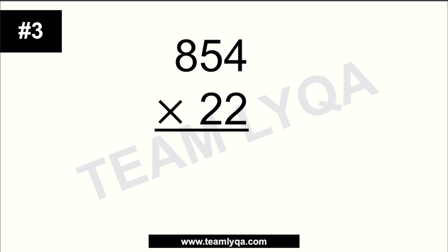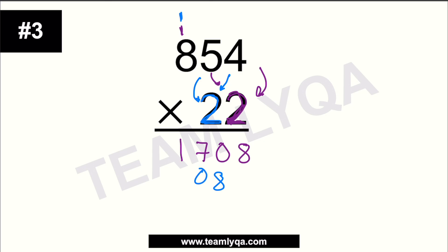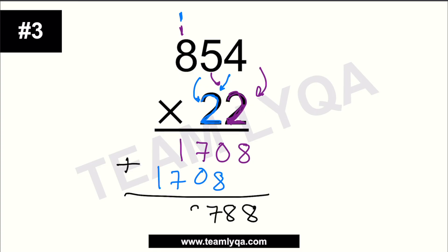For the third question, we have a 3-digit number, 854, times 22. Start with the 1s digit of 22, which is 2. Focus on that 2: 4 times 2 is 8. 5 times 2 is 10 — write the 0, carry the 1. 8 times 2 is 16, plus 1 is 17 — write 17 since there's nothing beside it. Now look at the 10s digit of 22, another 2: 4 times 2 is 8; 5 times 2 is 10; 8 times 2 is 16, plus 1 is 17. Add everything: 8; 0 plus 8 is 8; 7 plus 0 is 7; 1 plus 7 is 8; and the leading 1. The answer is 18,788.